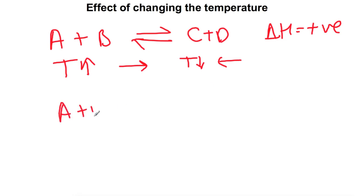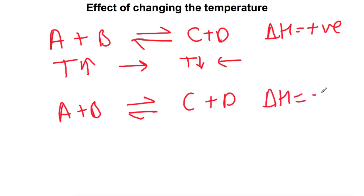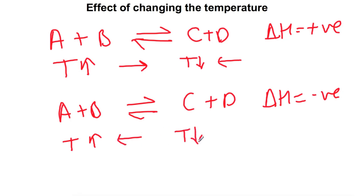If we had the same reaction but with a negative delta H, then we would see different things happening when we change the temperature. If you were to put the temperature up for an exothermic reaction — a reaction that already produces heat along with the products — then that will push the reaction backwards as it tries to get rid of the heat and will favour the endothermic reaction. If, however, you were to put the temperature down, the reaction will try to produce more heat to bring the temperature back up again and will therefore push the reaction to the right.